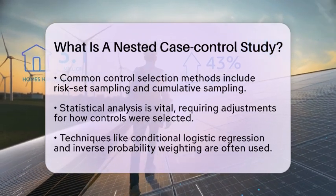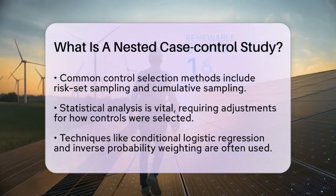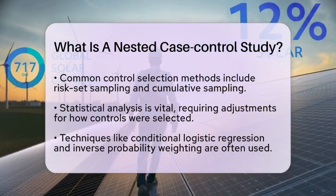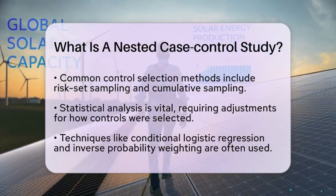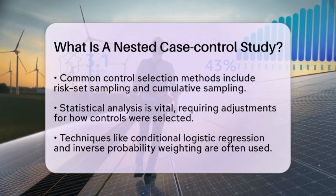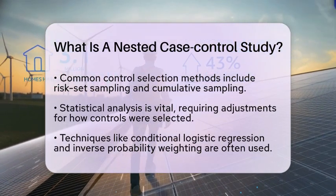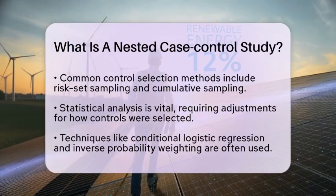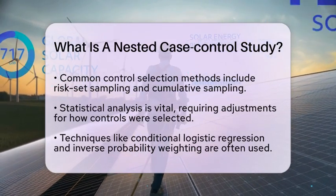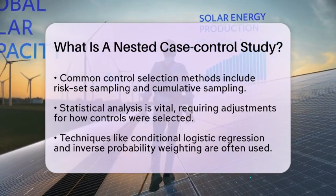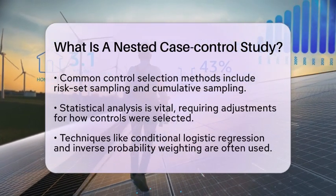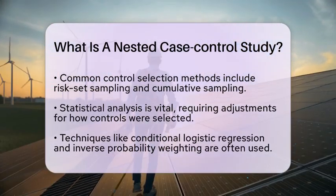Statistical analysis in nested case control studies is crucial. Researchers must account for how controls were selected. Common techniques include conditional logistic regression, which adjusts for the matched design, and inverse probability weighting to handle missing data. It is important to avoid treating the selected cases and controls as if they were randomly sampled from the entire cohort, as doing so could lead to biased estimates, which can affect the study's findings.